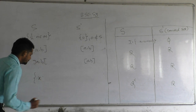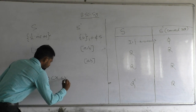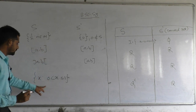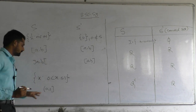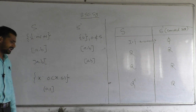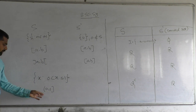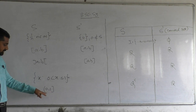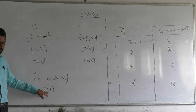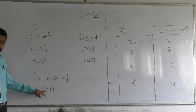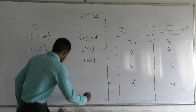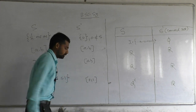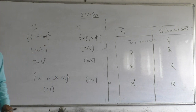Again consider the set {x : 0 < x ≤ 1}, which is open at the left end and closed at the right end. Note that 1 is a limit point and belongs to the set, but 0 is a limit point and does not belong to the set. Therefore the derived set of this set is the closed interval [0, 1].